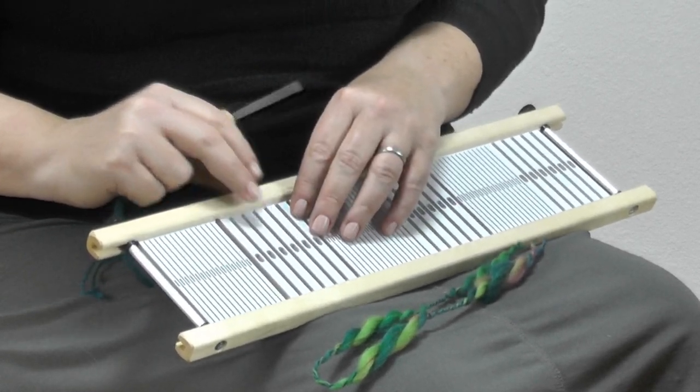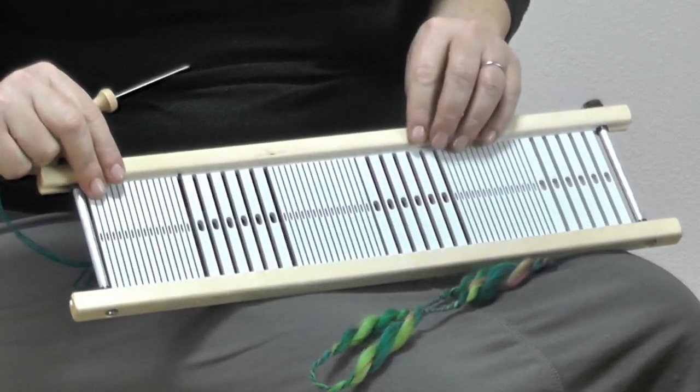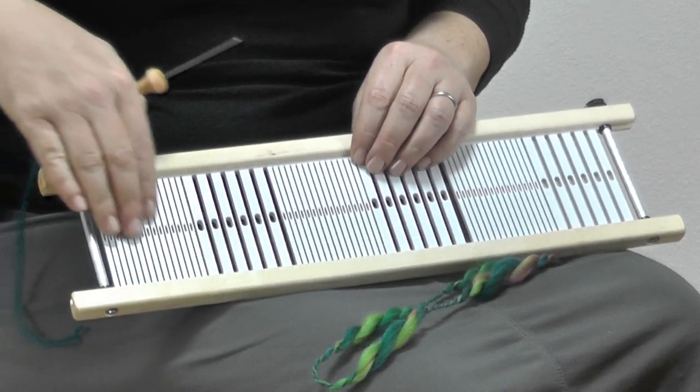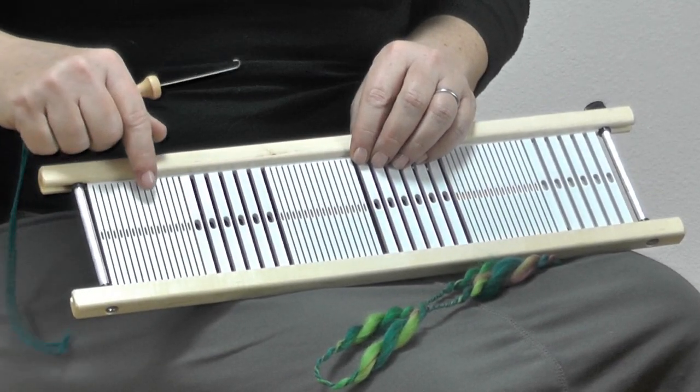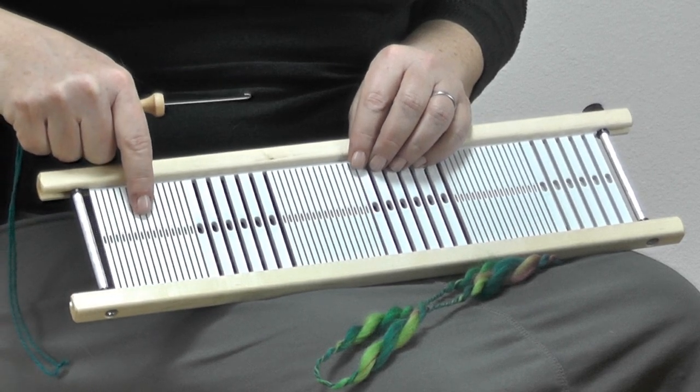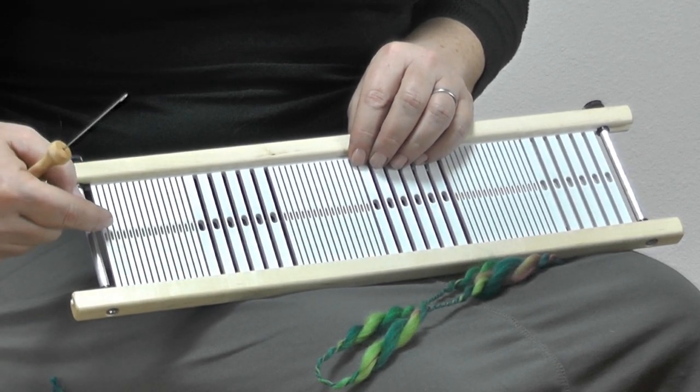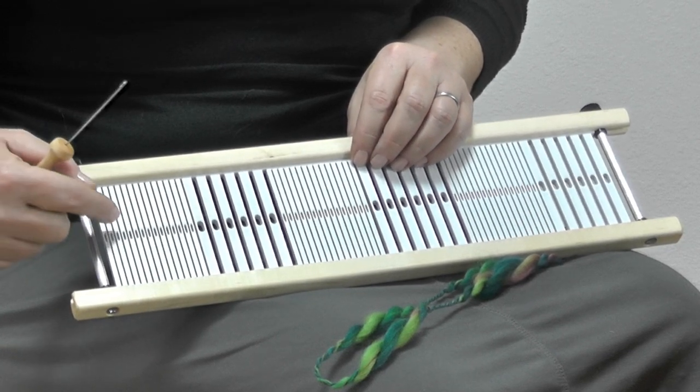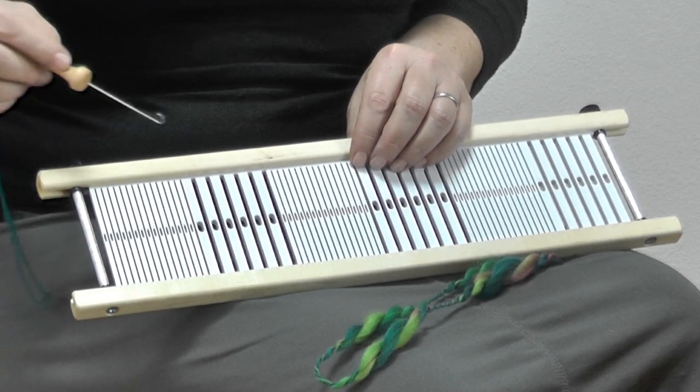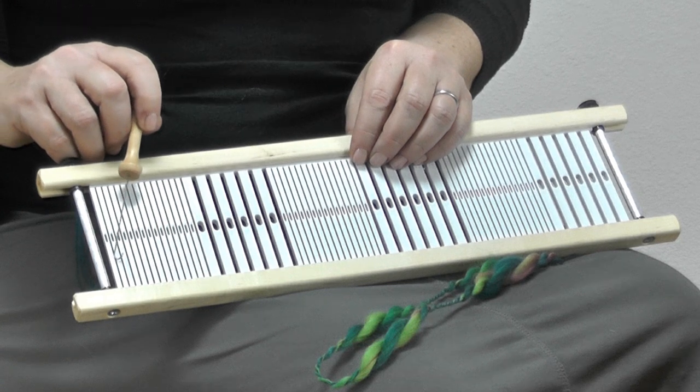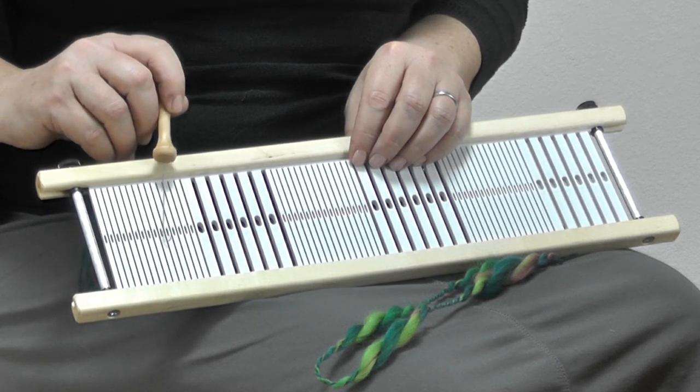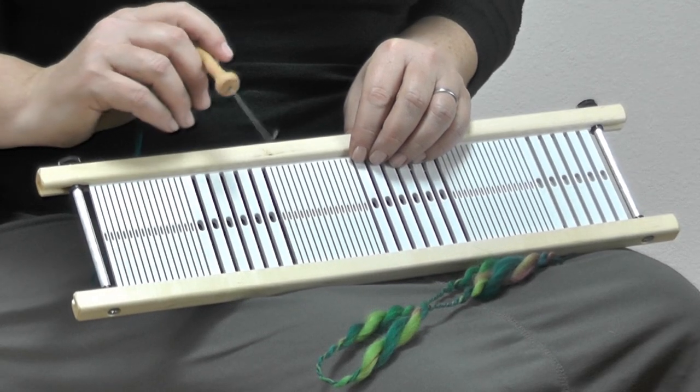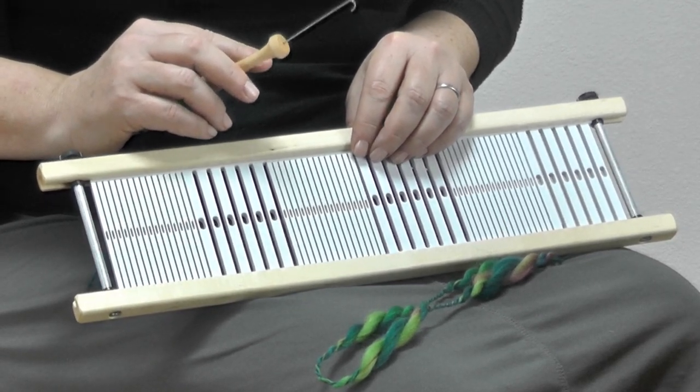First, let's take a look at the variable dent reed. In this reed, we're able to put in sections of different dents. A dent is how many slots and holes you have per inch, giving you the EPI or ends per inch. You can see that these are much closer, and these are much further apart. These large sections work really well for bulky yarns.